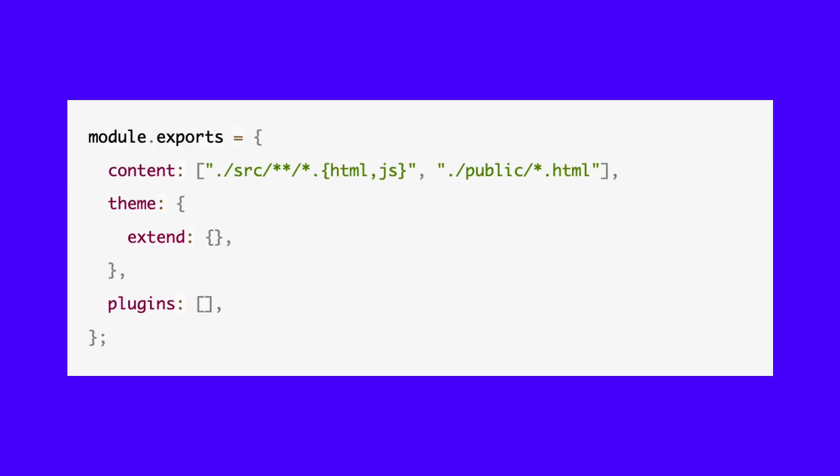Next, generate your tailwind.config.js file by running this command. The tailwind.config.js file will be empty when created, so we have to add some lines of code. The file paths provided in the content array will enable Tailwind to purge or remove any unused styles during build time. The next thing to do is to add the Tailwind directives to your CSS file in the src folder — this is where Tailwind generates all of its predefined utility styles for you.